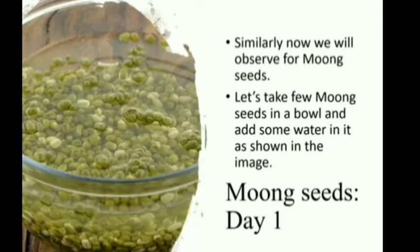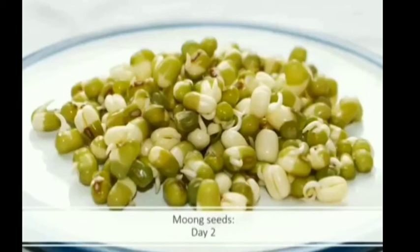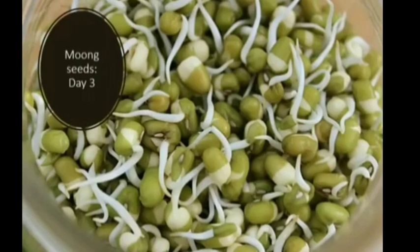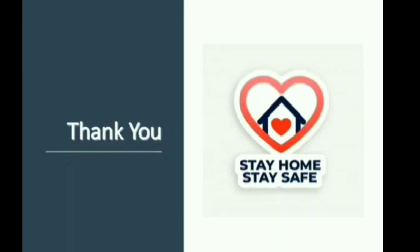Thank you so much. Please understand this chapter properly. Now we will do one interesting activity — take a few wheat seeds in a bowl and add some water. The next day you will observe the change in wheat seeds. On the third day, you can see the sprouts of wheat seeds are completely formed. Similarly, for moong seeds — take few moong seeds, add water, and by day three the sprouts of moong seeds are completely formed. Thank you, students.